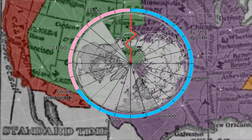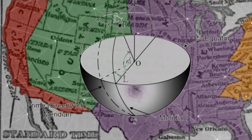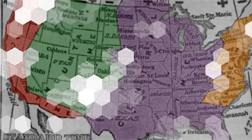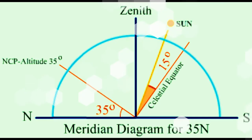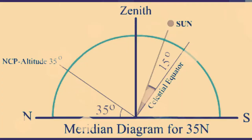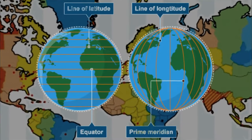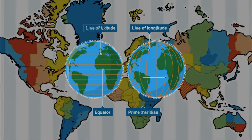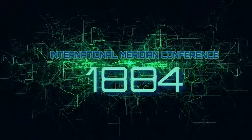Various meridians were used for longitudinal references among different countries before the late 1800s, and the Greenwich meridian was the most popular of these. The Greenwich Observatory's reputation for reliability and accuracy in publications of its navigational data was one factor that contributed to the Greenwich meridian's popularity. Moreover, the shipping industry would benefit from having just one prime meridian. Many people informally recognized the Greenwich meridian as the prime meridian before the International Meridian Conference in 1884.